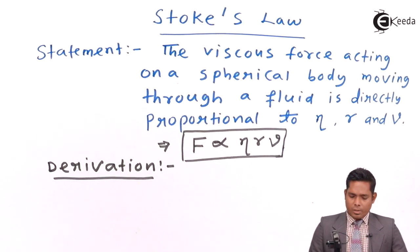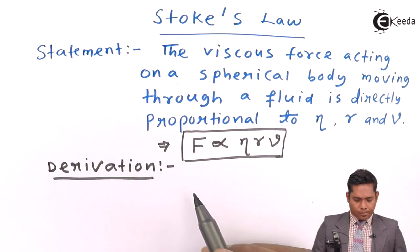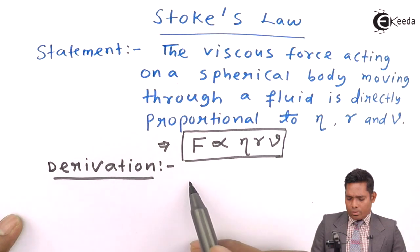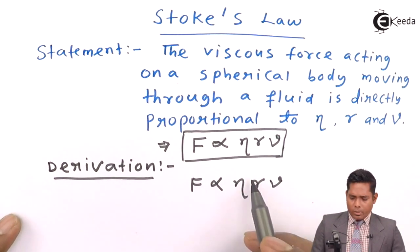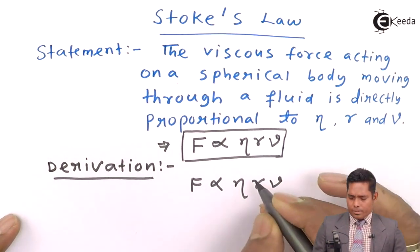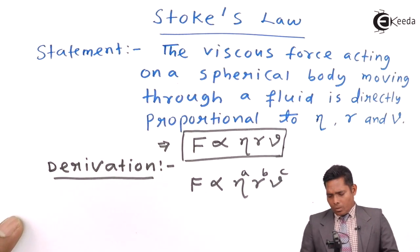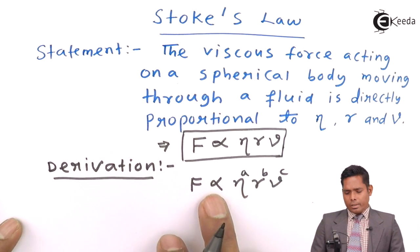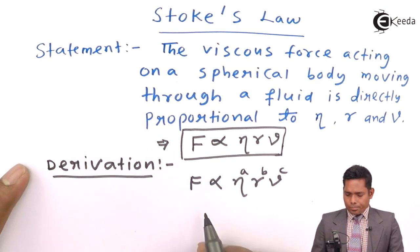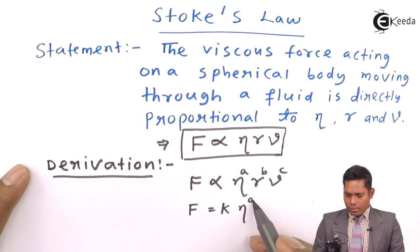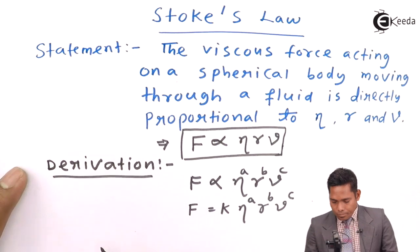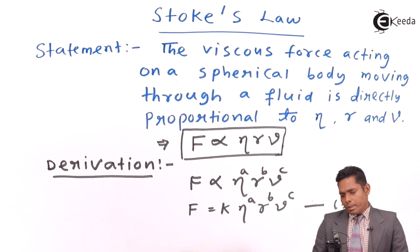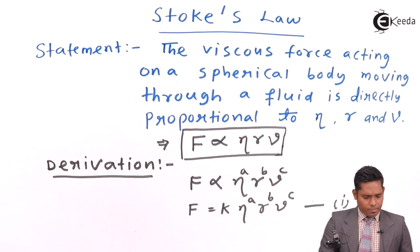For the derivation, we will derive the expression using dimensional analysis. The force is directly proportional to eta to the power a, r to the power b, and v to the power c, where a, b, and c are unknown powers. Removing the proportionality sign, we introduce a constant k, giving us equation number one: F equals k times eta raised to a, r raised to b, v raised to c. We will use dimensional analysis on both sides to find the values of a, b, and c.